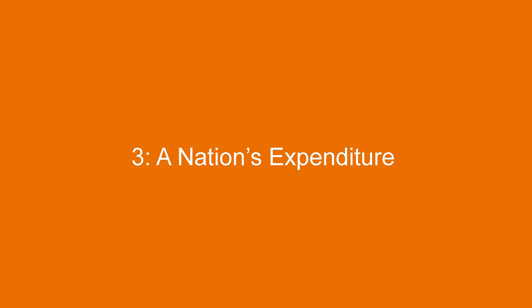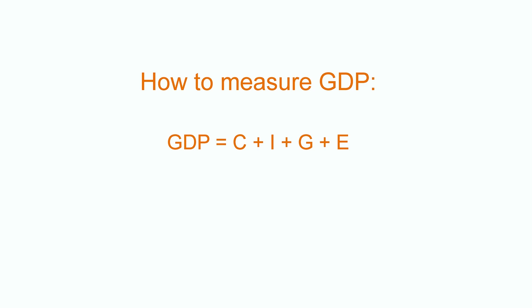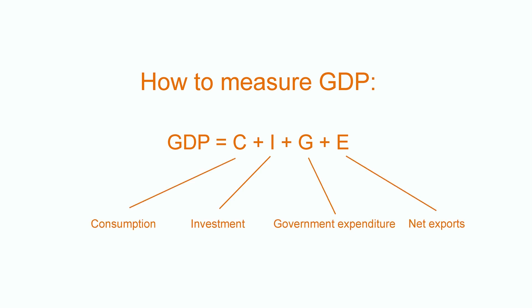A second way is to add up all the ways in which GDP is spent. This is a nation's expenditure. This gives the equation where GDP is equal to C plus I plus G plus E. C is consumption — that is, the consumption of households. I is investment — that is, investment in capital, in production structures, and in inventories.